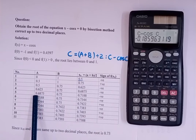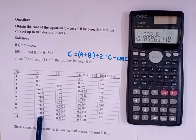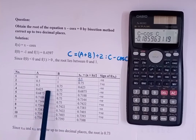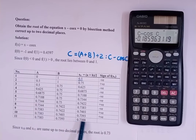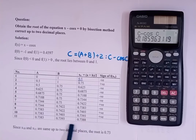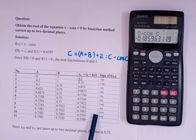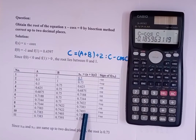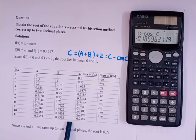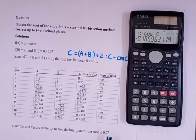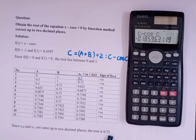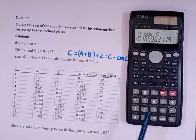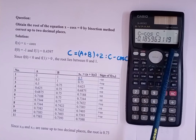The same way you can carry out further iterations. As you can see, at the 10th and 11th iterations the value is the same up to two decimal places, so the root will be 0.73.